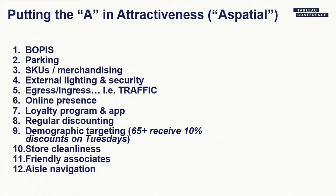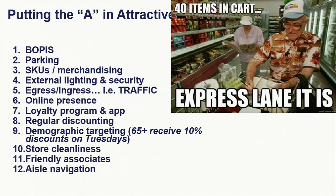They have an online presence, a loyalty app — that's important. They have a better loyalty program. They do regular discounting, demographic targeting. For example, have you ever been in a Kroger or a Walmart? Kroger in particular does discounting for senior citizens 65 years and older. Store cleanliness, friendly associates — all of these things are attractiveness features that are relevant to doing a retail site selection model.